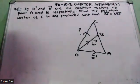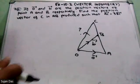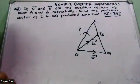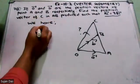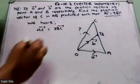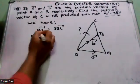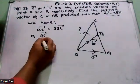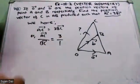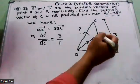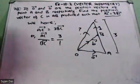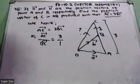We have to find OC vector first. So, given: AC vector equals 3 BC vector.